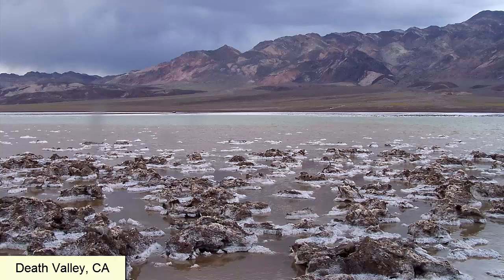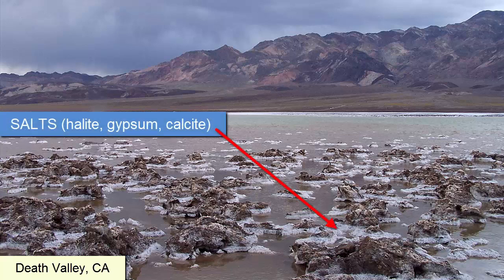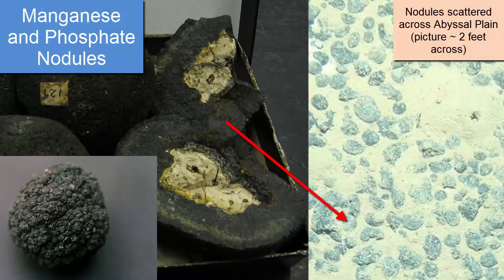At shallow inland seas where rains are limited and evaporation rates are high, minerals can precipitate in high amounts. These minerals consist of halite, gypsum, and calcite. In some areas of the abyssal plains, dissolved phosphates and manganese become supersaturated and precipitate as nodules that grow bigger over time as new material precipitates atop the older material.